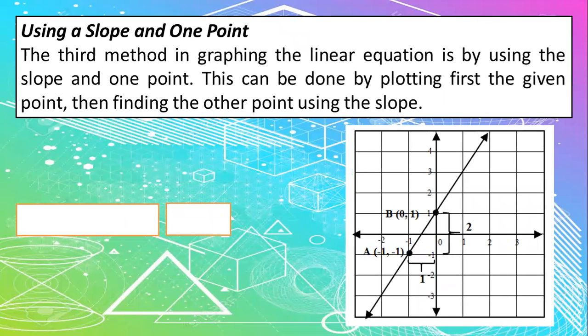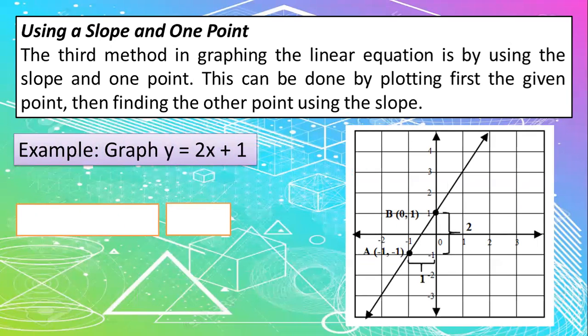And lastly is that we have using a slope and one point. So this time, we will still graph y is equal to 2x plus 1. Same given but different ways. So this can be done by plotting first the given point, then finding the other point using the slope. So for our solution, let us say that x is equal to negative 1.